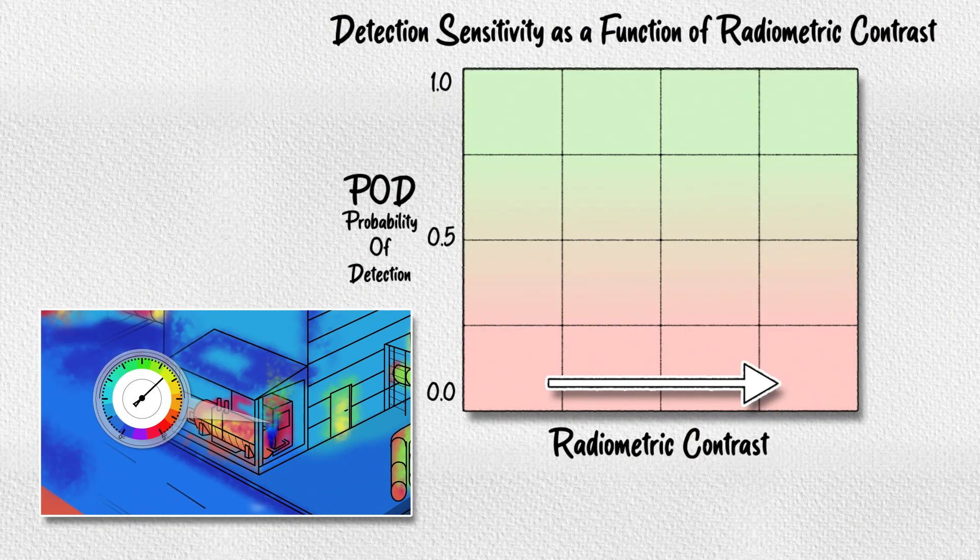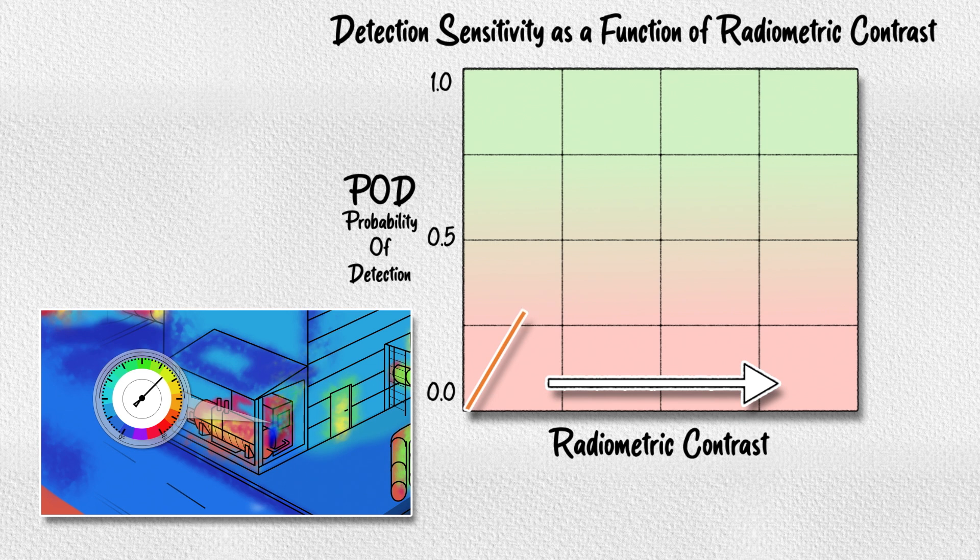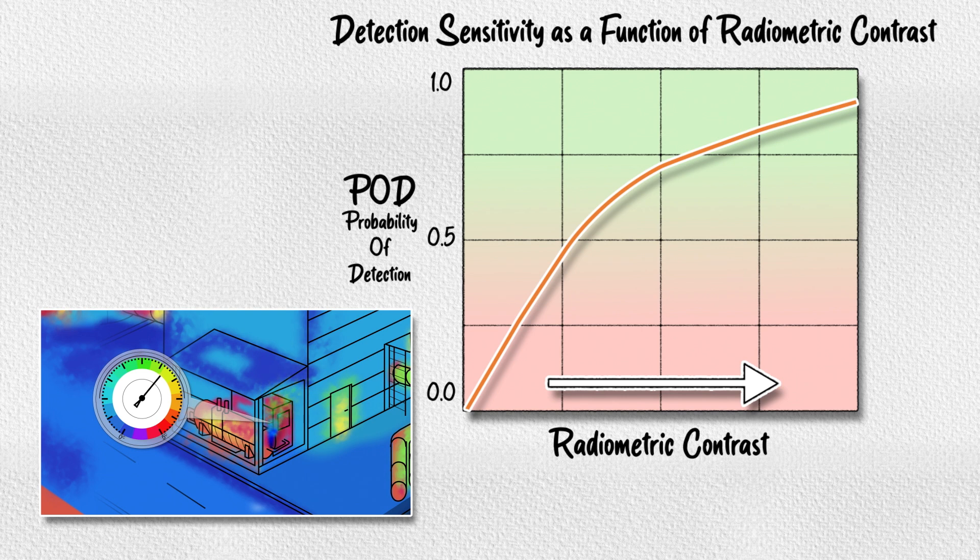The thicker the gas cloud is, the less contrast is required for its detection. Notice that as the radiometric contrast increases, the sensitivity and probability of detection becomes higher.